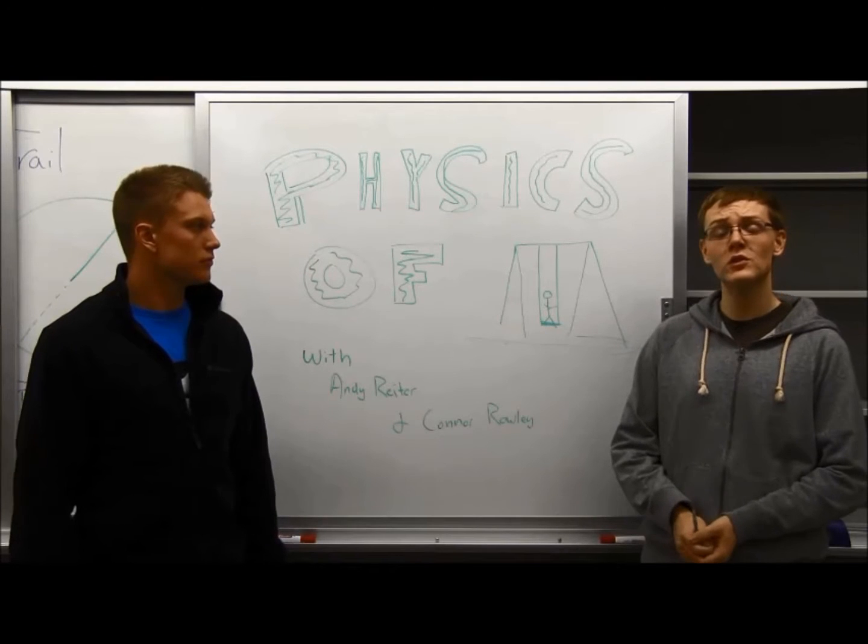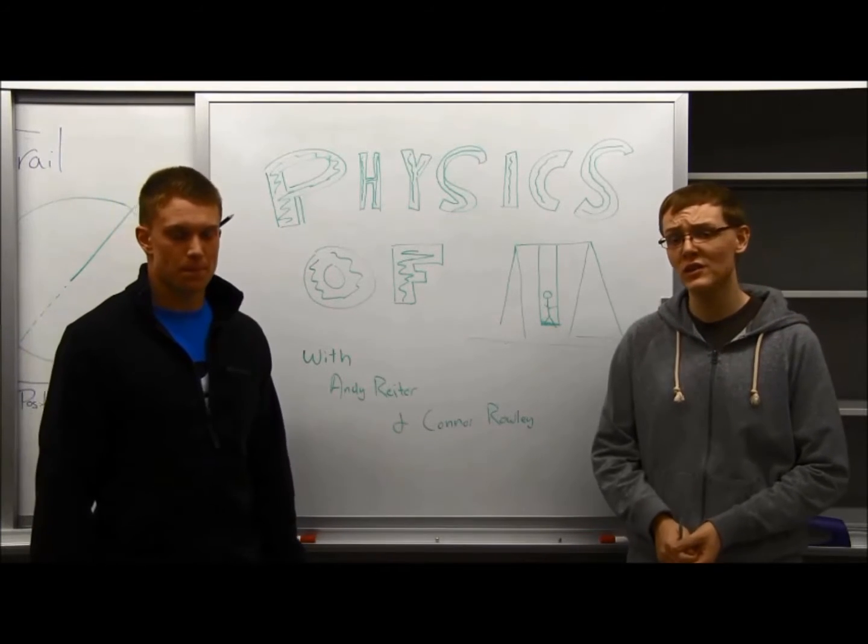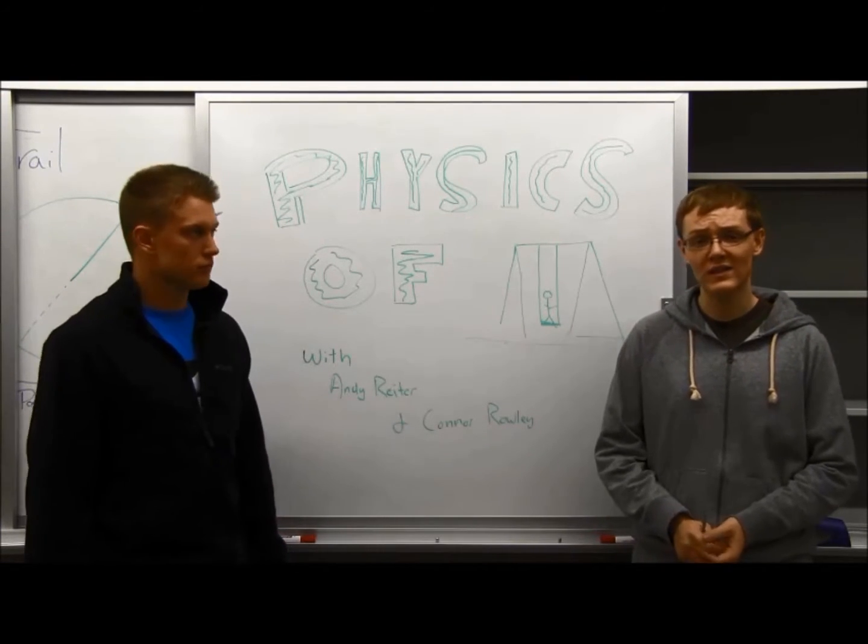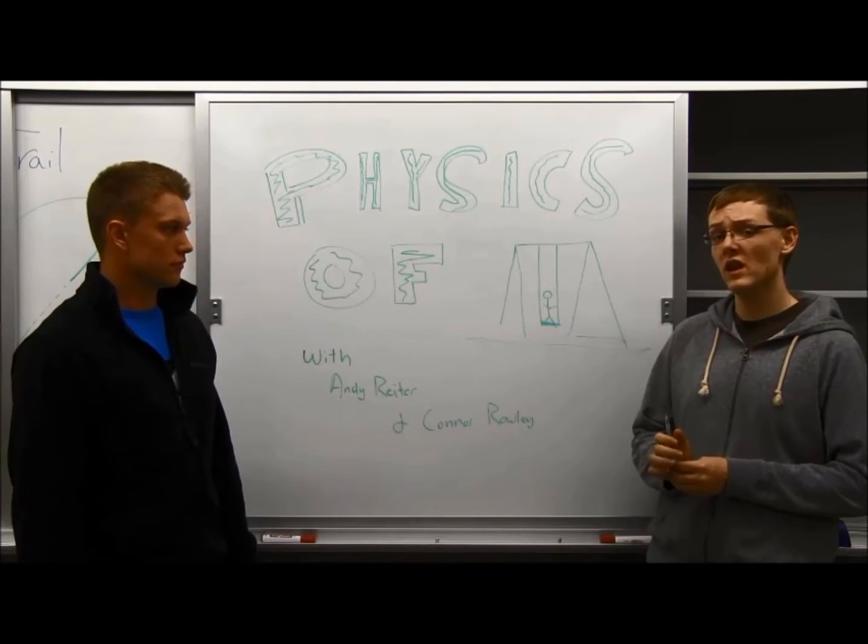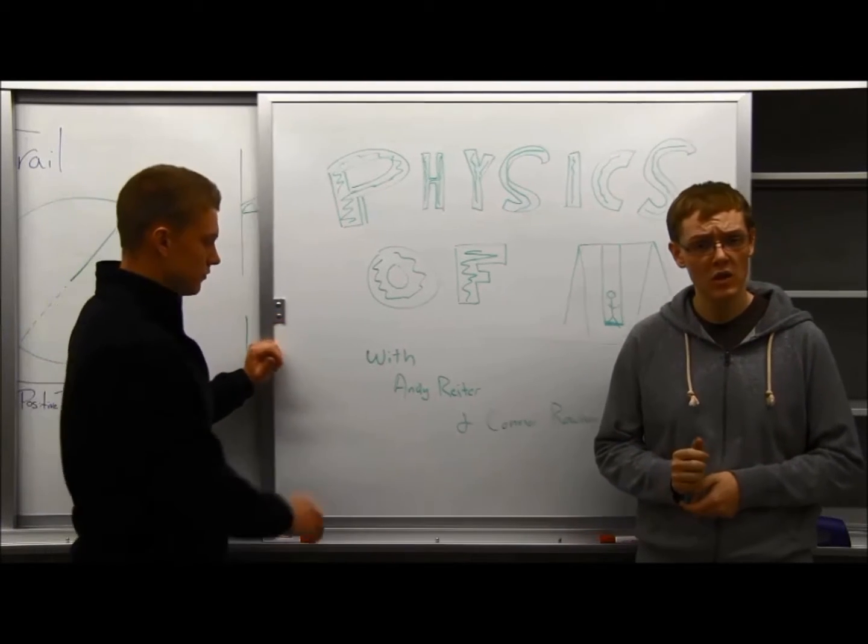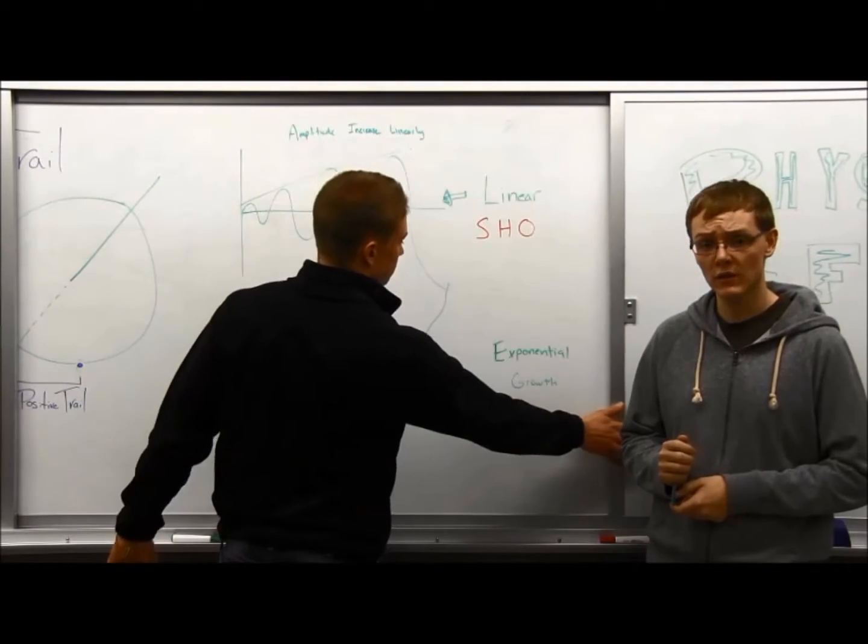A parametric oscillator is similar to a simple harmonic oscillator except for two key things. The first one is that something about a parametric oscillator varies with time. This could either be the force on the object, the mass of the object, or the distance the object is away from the pivot point.